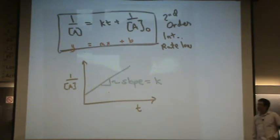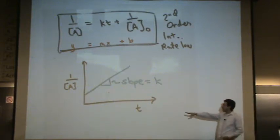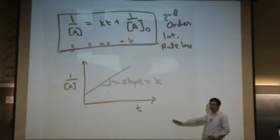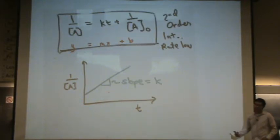If I want to show it's first order, I need to plot the natural log versus time to get a line sloping downwards. Or if I want to show it's zero order, I plot just the concentration versus time.